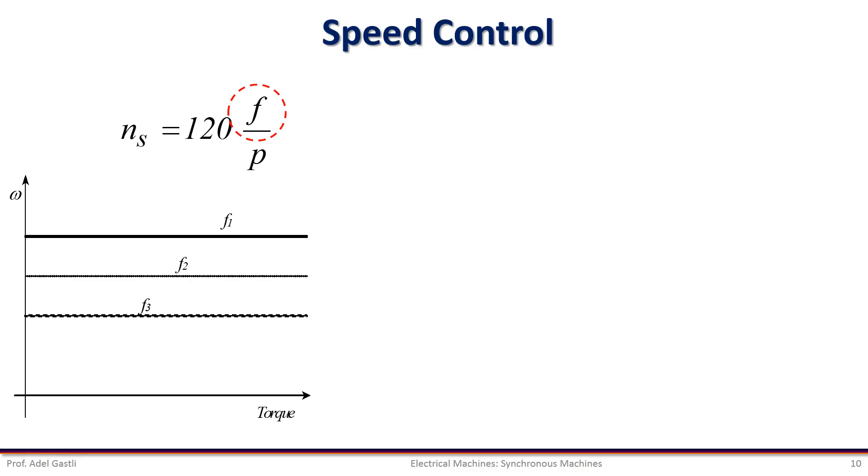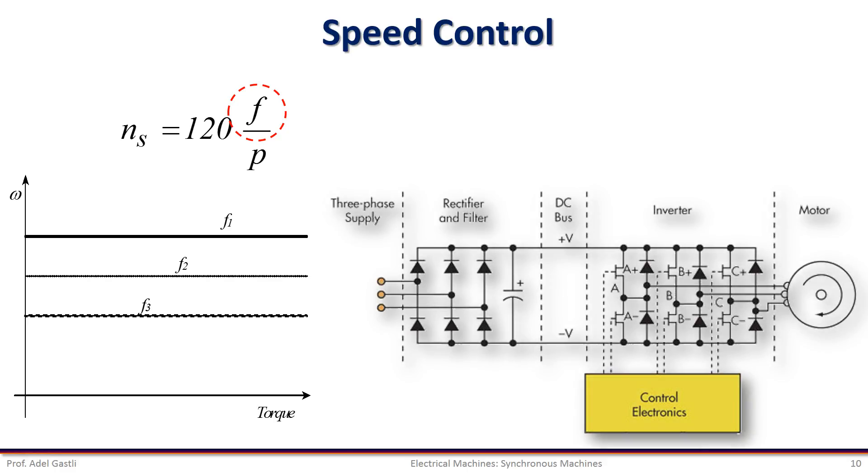Note that, unlike the speed of induction machines, the speed of synchronous machines does not change with the torque. Frequency control can be achieved by power electronics converters, as shown in this example.